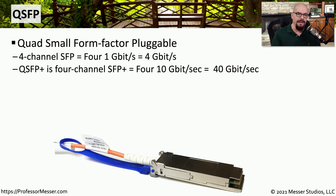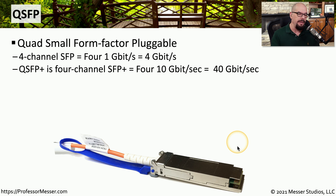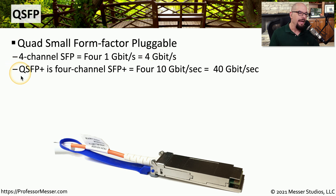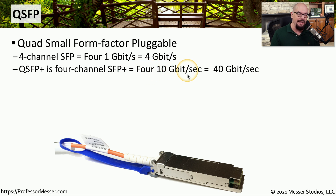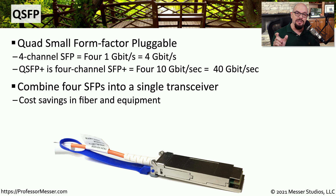As with most network infrastructure devices, you can get more value from that device if you can fit more interfaces into a smaller area. In order to do that, we might use a transceiver that's a QSFP, or Quad Small Form Factor Pluggable. These are slightly larger than a traditional SFP, but they fit four times the amount of information. This is a four-channel SFP, which means you can have four one gigabit connections, or a total of four gigabits of throughput through a single QSFP. Just as an SFP has an SFP+, the QSFP has a QSFP+ that also has four channels, but instead of four channels of an SFP, it has four channels of an SFP+. That means you can fit four 10 gig connections, meaning a 40 gigabit link using a single QSFP+. This means you're not only saving space on the infrastructure equipment, you're also saving the amount of fiber that you're using between those connections.